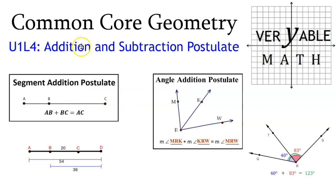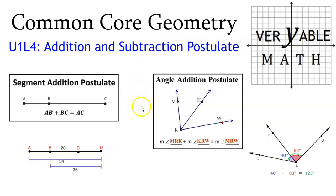Hello students. This video is about the fourth lesson in unit 1, entitled Addition and Subtraction Postulate. These postulates are really just one postulate masquerading as two. The idea is that the parts of an entire diagram add up to the measure of the entire diagram, whether it's a segment, an angle, or what-have-you.